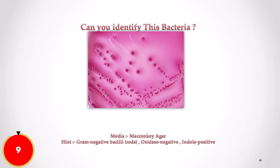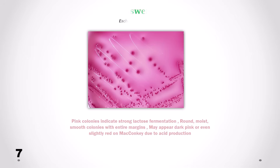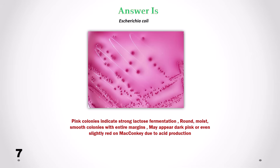Can you identify this bacteria? Correct answer is Escherichia coli. We can see pink colonies which indicate strong lactose fermentation. Colonies look round, moist, smooth with entire margins. May appear dark pink or even slightly red on MacConkey due to acid production.